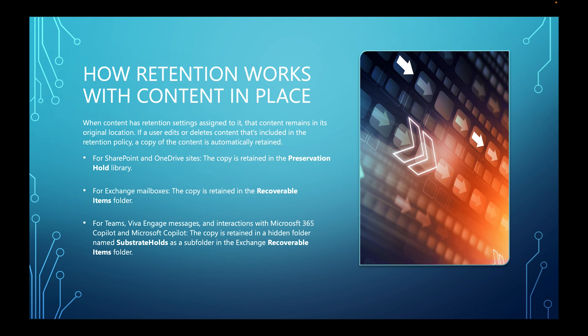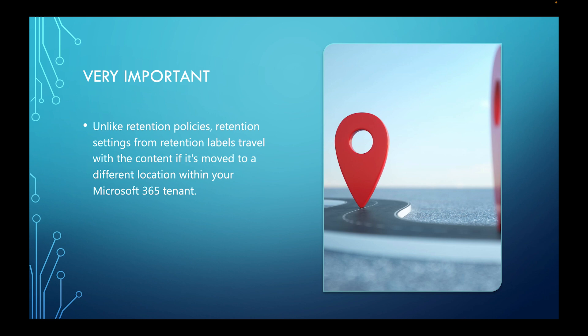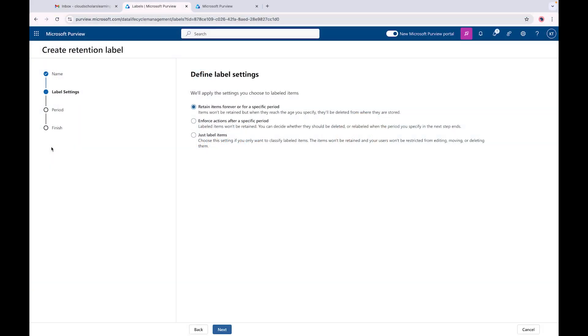There is a difference between retention policies and retention labels. A retention policy assigns the same retention settings for content at a site or mailbox level. A retention label assigns retention settings at an item level - like a folder, document, or email. This is very important: unlike retention policies, retention settings from retention labels travel with the content if it's moved to a different location within your Microsoft 365 tenant. So you'll want to apply policies at the SharePoint site level, but if something is extremely important you should also have a label associated with it.